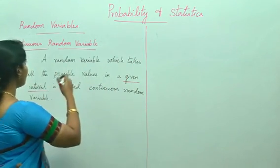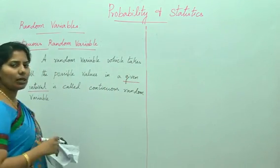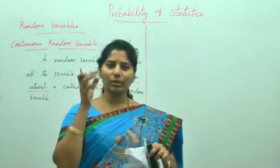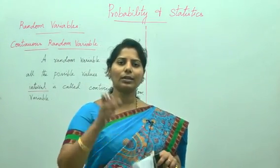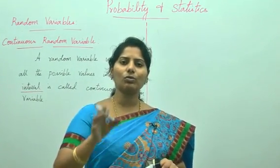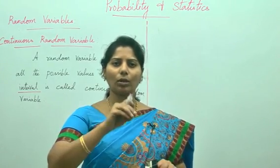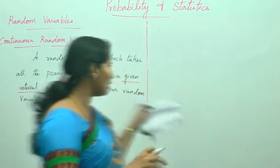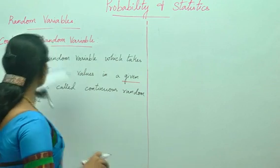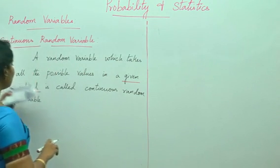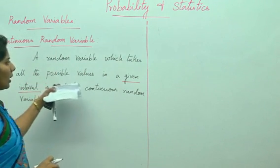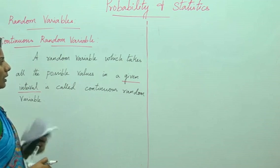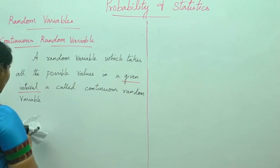What is the difference between the discrete and the continuous random variable? For discrete, it takes values only on the set — whatever values are present in the set, it will take. For a continuous random variable, it will take all the possible values in a given interval.